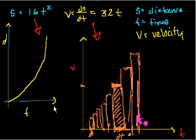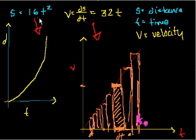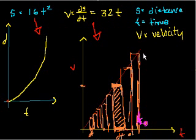It's like a parabola for positive time. And then we said, well, the velocity — if we know the distance, the velocity is just the change of the distance with respect to time. And since the velocity is always changing, you can't just take the slope. You'd actually have to take the derivative. So we took the derivative with respect to time of this function, and we got 32t, and this is the velocity, and then we graphed it.